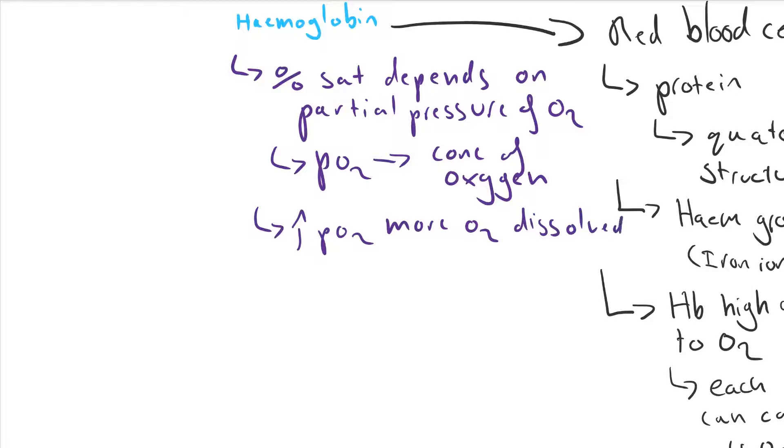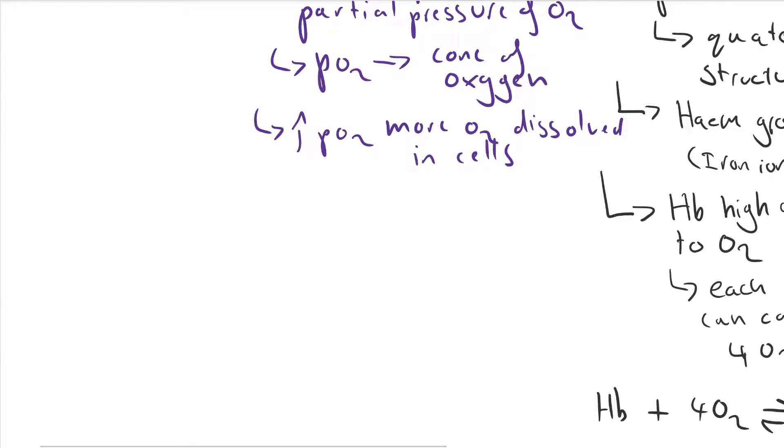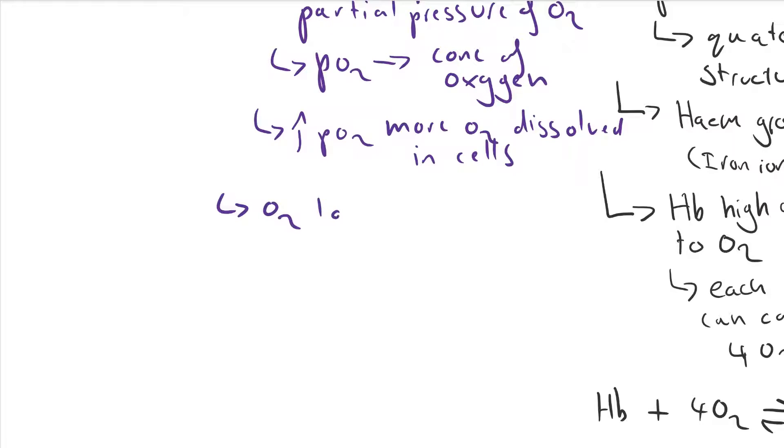Now, hemoglobin's affinity, how likely it is to bind with oxygen, depends on how high the partial pressure of oxygen is in the cell surrounding the hemoglobin.